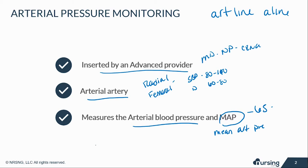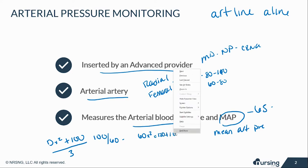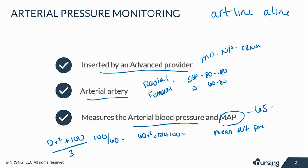An easy way to calculate the MAP is: diastolic blood pressure times two, add your systolic, then divide by three. For example, if a patient has a blood pressure of 100 over 60 — diastolic times two is 120, add systolic of 100, giving 220 — divide that by three, so the mean arterial blood pressure is 73.